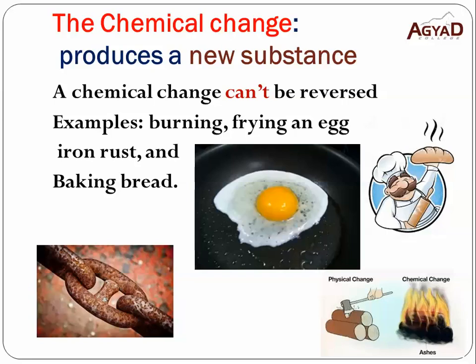The chemical change produces a new substance. For example, if you fry an egg, you can't return the fried egg into an egg again. If you bake bread, you can't return the bread into flour again. If you burn wood, you can't return the ash into wood again. If an iron nail rusts, you can't return the iron rust into iron again. So the chemical change produces a new substance.